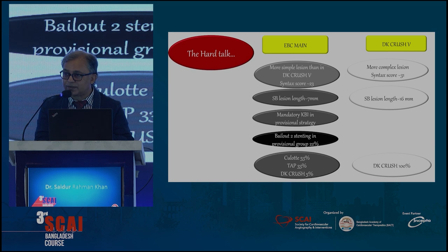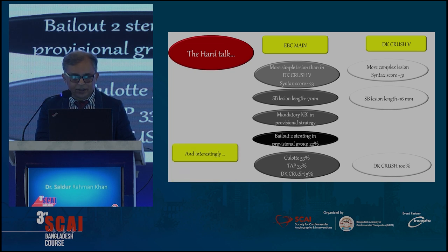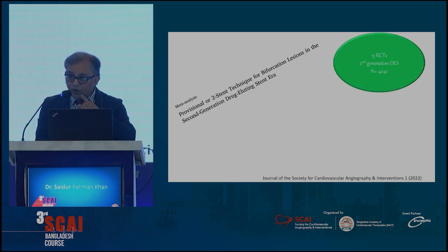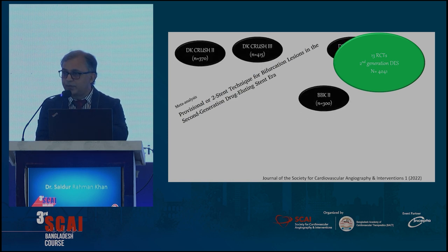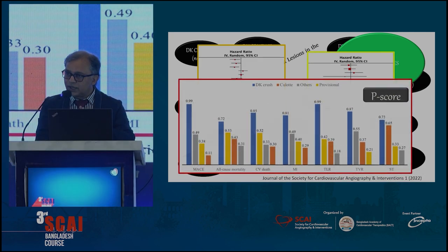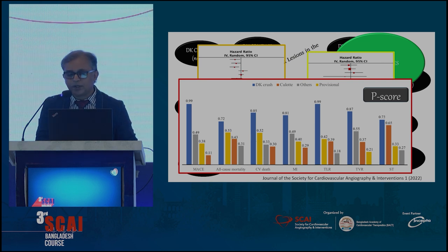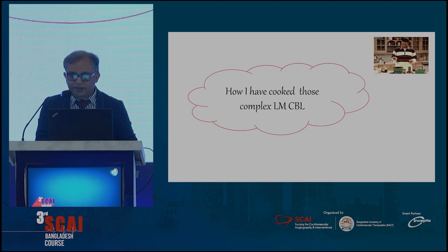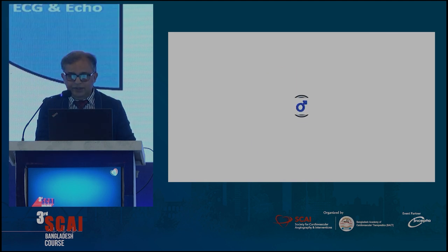The hard talk compared EBC main and DK crush — both dealt with true bifurcation lesions, but the complexity was the question. DK crush had more complex lesions with a higher SYNTAX score. Interestingly, EBC main used culotte in 53% of cases, while DK crush used the DK crush technique in 100% of cases. Looking at 13 RCTs in a sky paper, the two-stent strategy is better than provisional in a special subset of patients, and DK crush has the highest P-score.